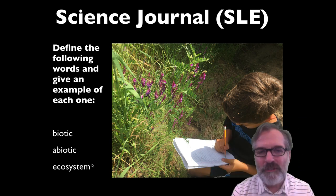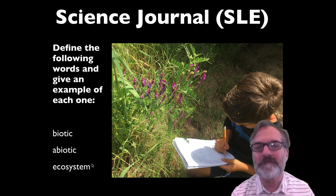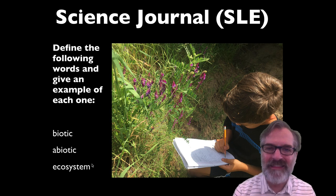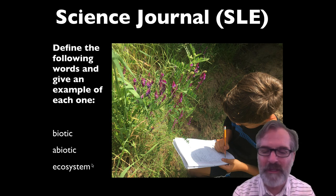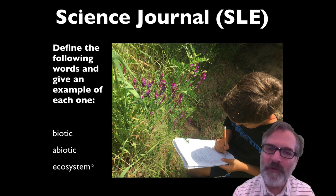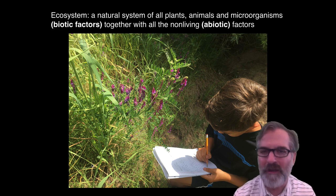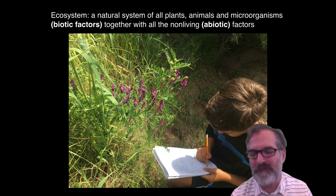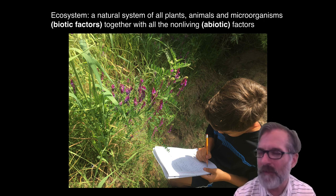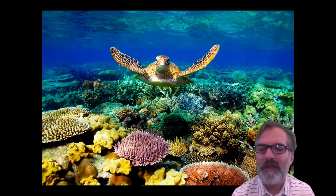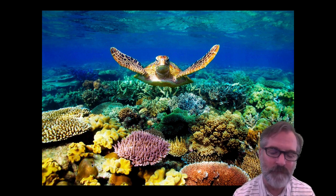Hopefully you said biotic would be any living thing found in the environment or that ecosystem. Anything that is abiotic would be non-living, like the sun, the wind, the minerals in the soil, or water. If you put those two together, you come up with an ecosystem—a natural system of all plants, animals, and microorganisms, which are the biotic factors, together with all the non-living or abiotic factors. Here we have a coral reef ecosystem, or the tropical rainforest with its living and non-living components.